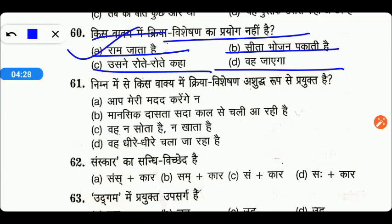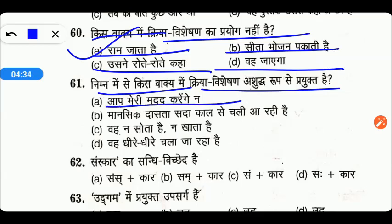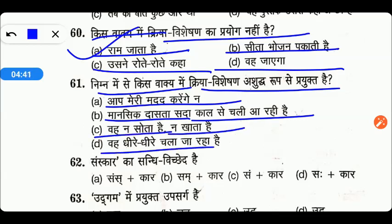निम्न में से किस वाक्य में क्रिया विशेषण असद रूप से प्रयोग है: आप मेरी मदद करेंगे न, मानसिक दासता सदा काल से चली आ रही है, वह ना सोता है ना खाता है, या फिर वह धीरे धीरे चला जा रहा है। तो friends यहाँ पर option B right होगा।